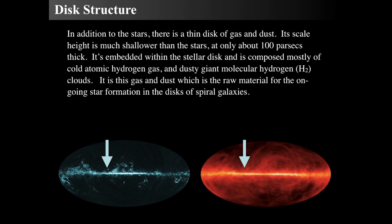The 21-centimeter emission happens because the hydrogen atom has a proton and an electron, both with a spin. When their spins are parallel, that's a higher energy state. The electron can randomly flip to become anti-parallel, losing a little energy and emitting 21-centimeter radiation. On the left, there's a lot of molecular hydrogen, which barely emits any light, so we trace it with carbon monoxide — this is a carbon monoxide map made by the Planck probe. Gas and dust are the raw materials for star formation, coming from an extraordinarily thin region, but they get shredded and puffed, giving that cirrus-like structure.